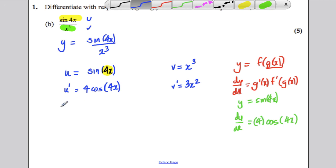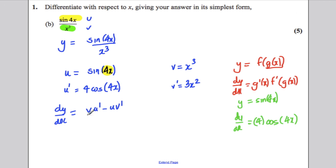Now, always state the rule you're using. The mark scheme says to do that. dy by dx is vu dash minus uv dash over v squared. Always state this. This is in the formula booklet, by the way, so make sure you just state it. The mark scheme says to do that.